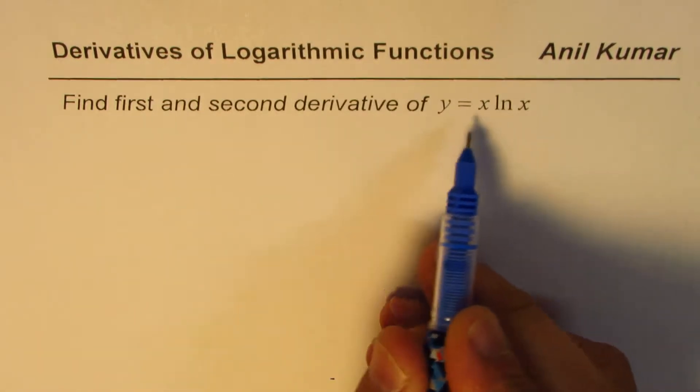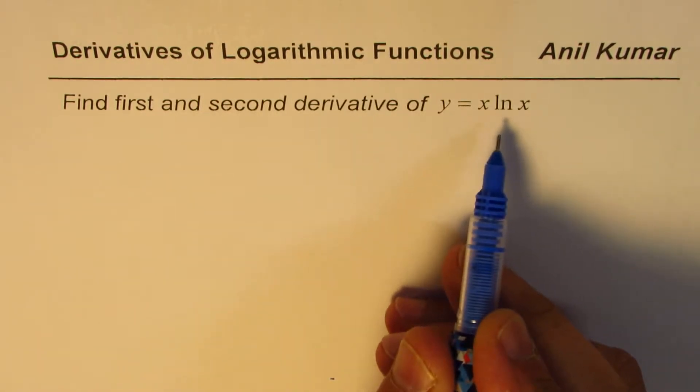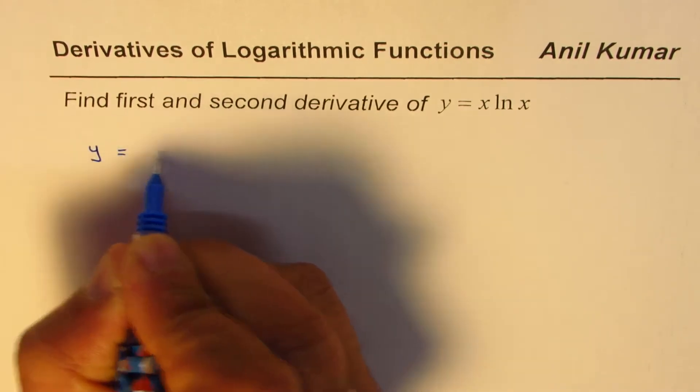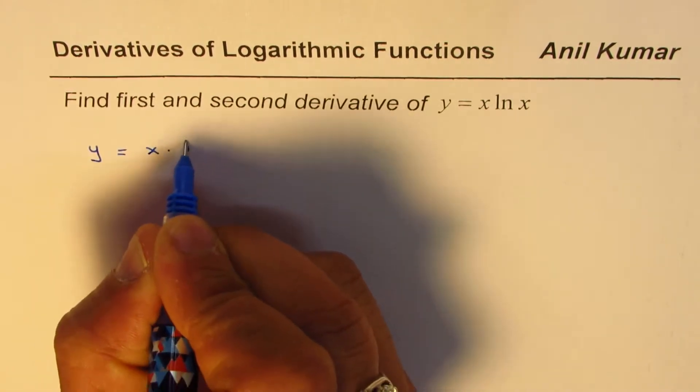Now we can apply the product rule to find the derivative of this function. We are given y equals x times ln x.